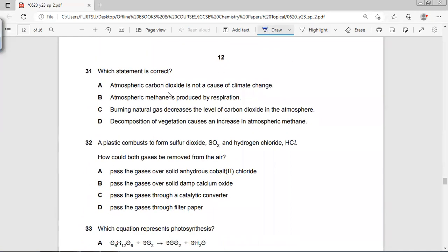Which statement is correct? Atmospheric carbon dioxide is not a cause of climate change? It is the number one cause. Atmospheric methane is produced by respiration? No, we respire, human beings don't produce methane, we produce carbon dioxide.